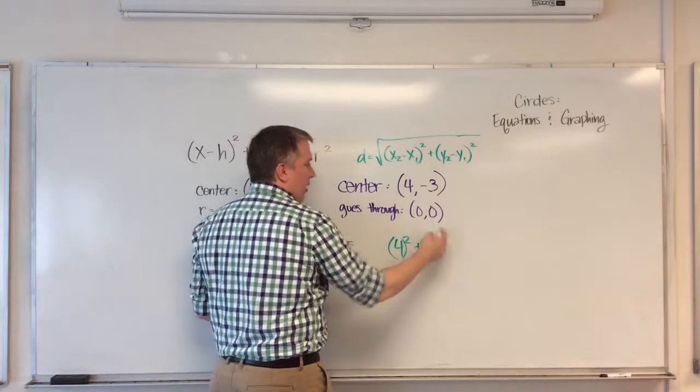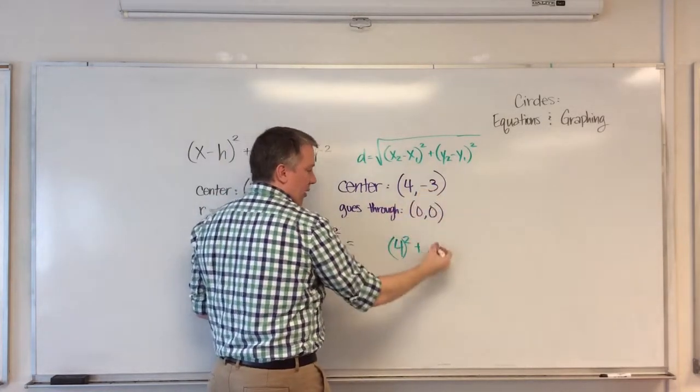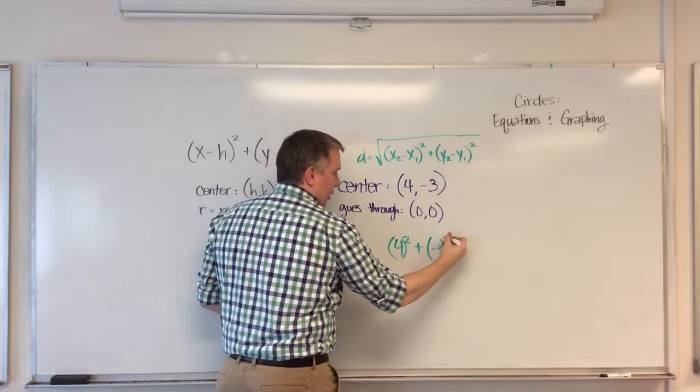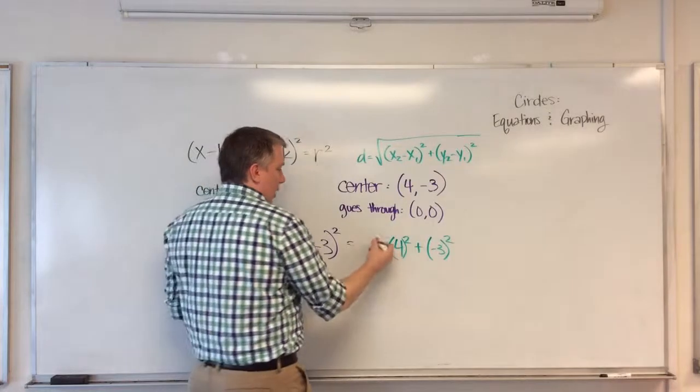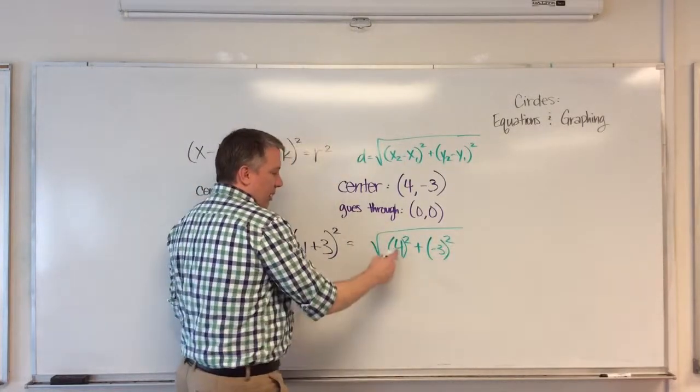And then I'm going to add negative 3 minus 0. Well, that's negative 3. And then I square that. And when I square it, you're squaring the whole thing. And then at the end, I'm going to take a square root. So let's do that.